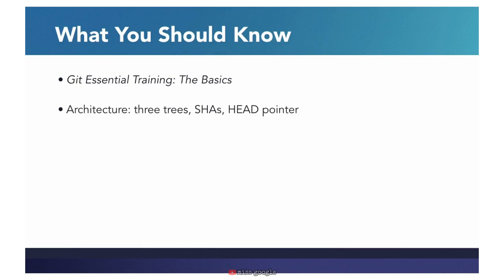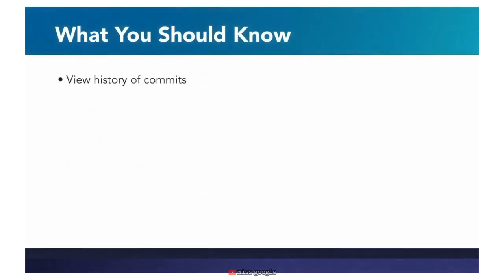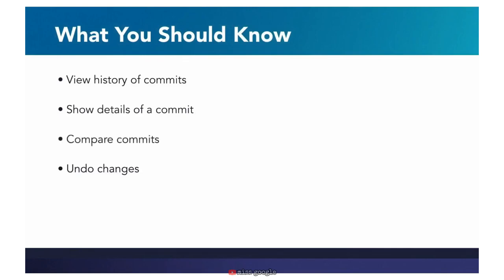Git has three trees: the working directory, the staging index, and the repository. We talk about SHAs and how they're used as identifiers and how Git generates them. We talk about the importance of the head pointer and the role it plays. We also learn to make commits to track file changes, write commit messages, and add and remove changes from the staging tree.